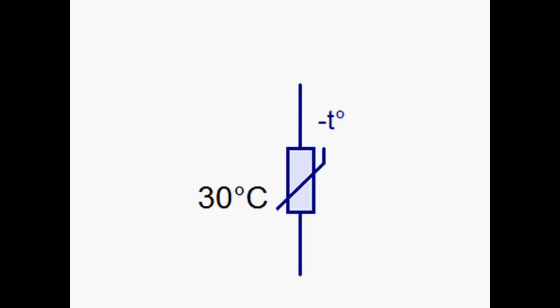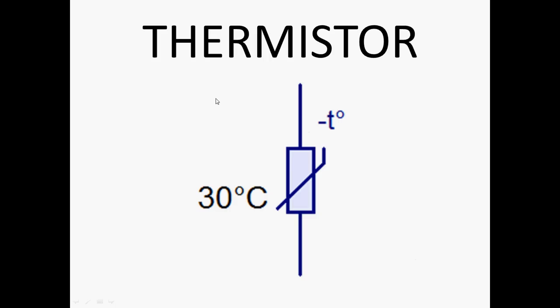This one's a thermistor, so it's a resistor that changes resistance with temperature. The way they work depends on what the symbol here says. If it says minus T, that means that as temperature increases, resistance drops. If it just has a regular T, a positive T, it means as temperature increases, resistance increases. So you can get two different types of thermistor.